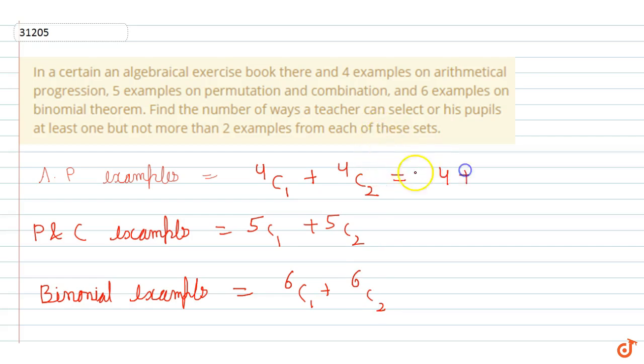4C1 plus 4C2 equals 4 plus 4C2. The value of 4C2 is 4 times 3 divided by 2, which equals 6. So the total value equals 10.